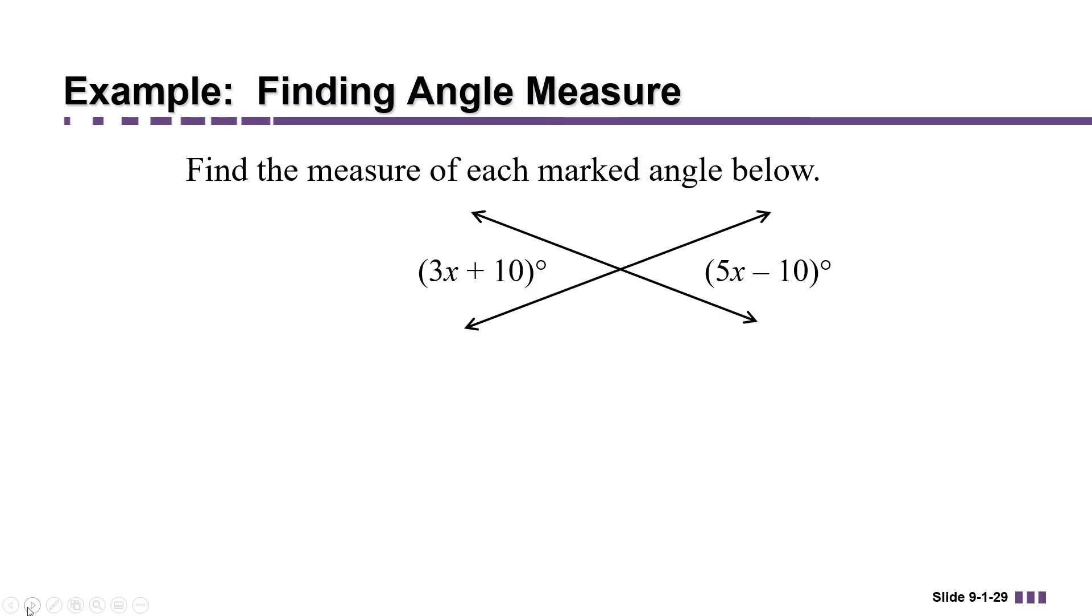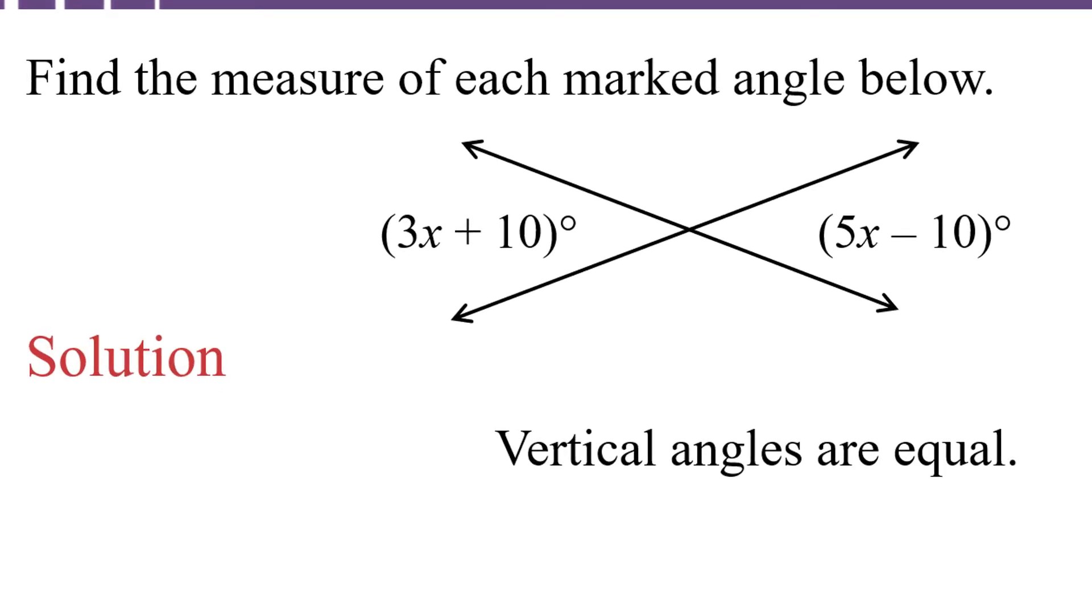Another situation where vertical angles could be helpful is if you're given two intersecting lines and two of the angles are marked with expressions representing the values or relative values of the two angles. Using the fact that vertical angles are equal, we can set up an equation that has to be true: 3x plus 10 degrees has to be equal to 5x minus 10 degrees.